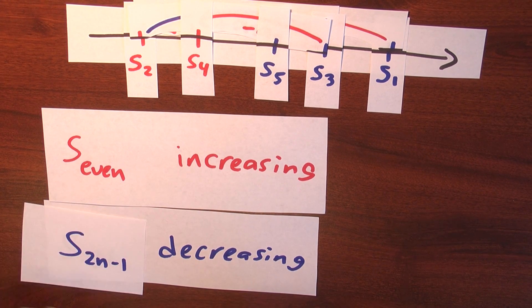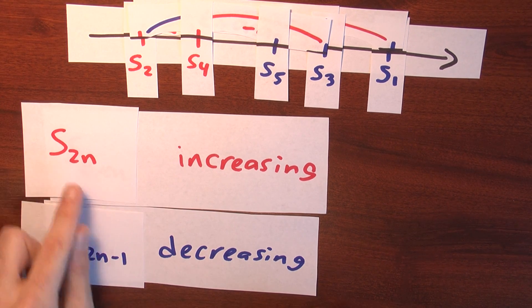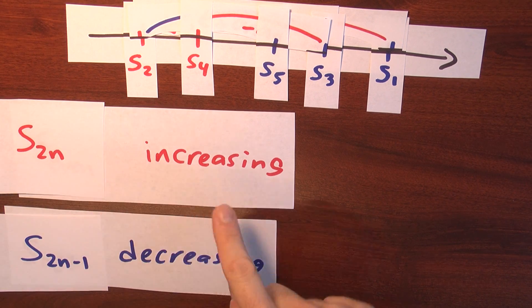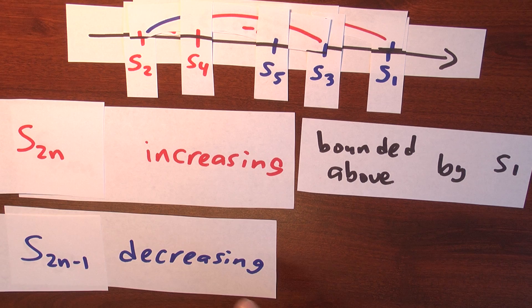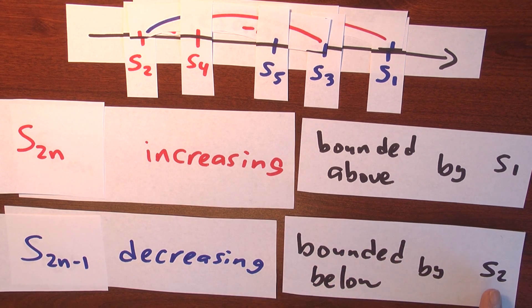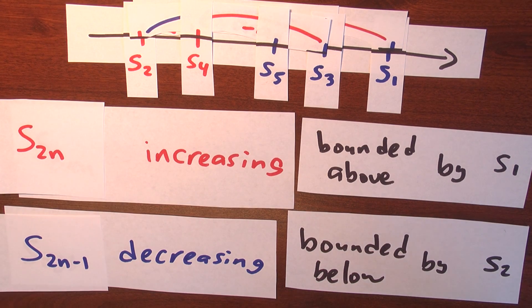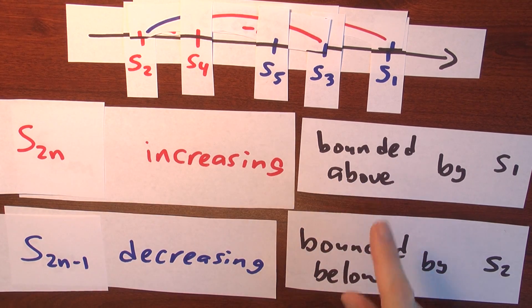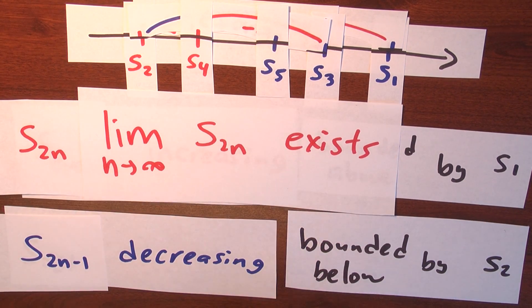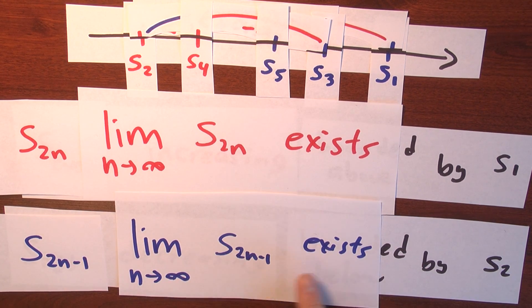More precisely, the sequence s_{2n-1} is decreasing and the sequence s_{2n} is increasing, so both subsequences are monotone. The even partial sums are increasing but bounded above by s_1, and the odd partial sums are decreasing but bounded below by s_2. So by the monotone convergence theorem, both the limit of the even partial sums and the limit of the odd partial sums exist.